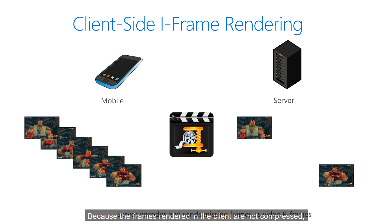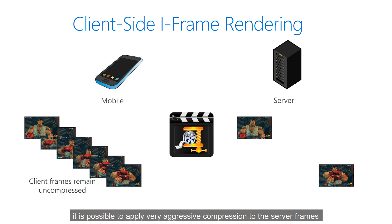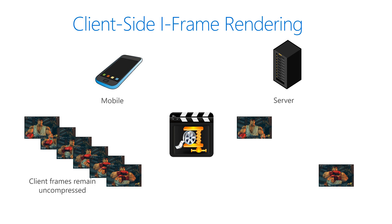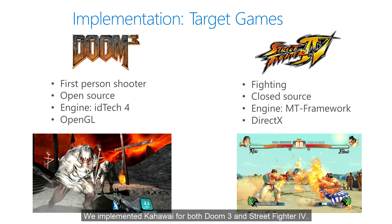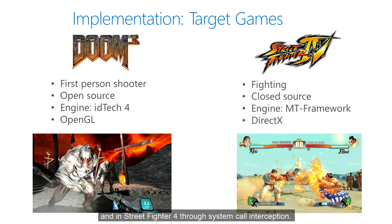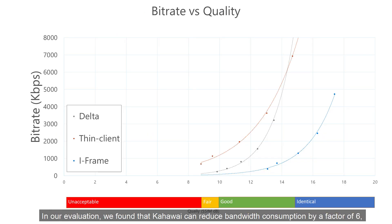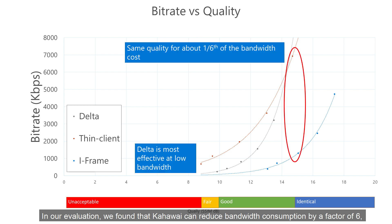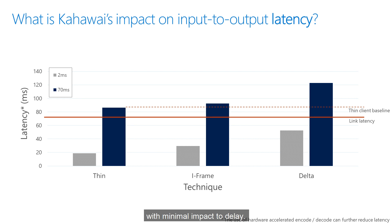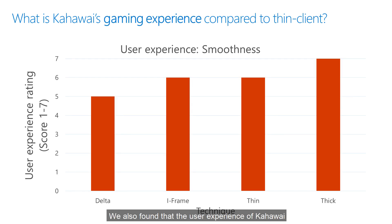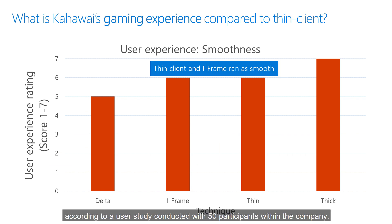Because the frames rendered on the client are not compressed, it is possible to apply very aggressive compression to the server frames without a noticeable loss in quality. We implemented Kawaii for both Doom 3 and Street Fighter 4, enabling deterministic execution support in Doom 3 through source code modification and in Street Fighter 4 through system call interception. In our evaluation, we found that Kawaii can reduce bandwidth consumption by a factor of 6 with minimal impact to delay, and that the user experience is comparable to that of a traditional thin client system, according to a user study conducted with 50 participants.